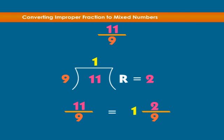You can clearly see how the answer is formed. The 2 is the remainder and becomes the numerator of the fractional part, and 9 is the original denominator, which becomes the denominator of the fractional part.